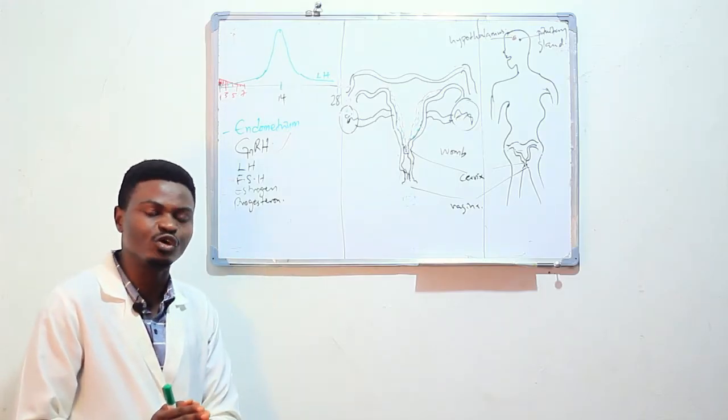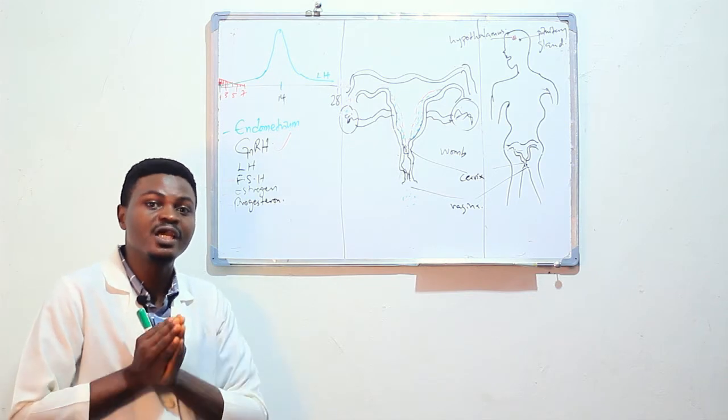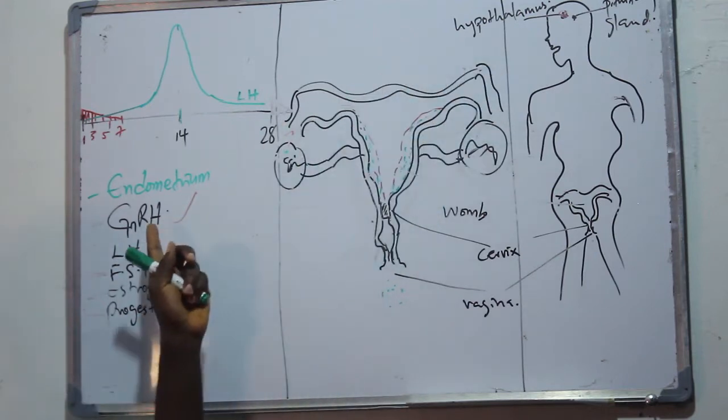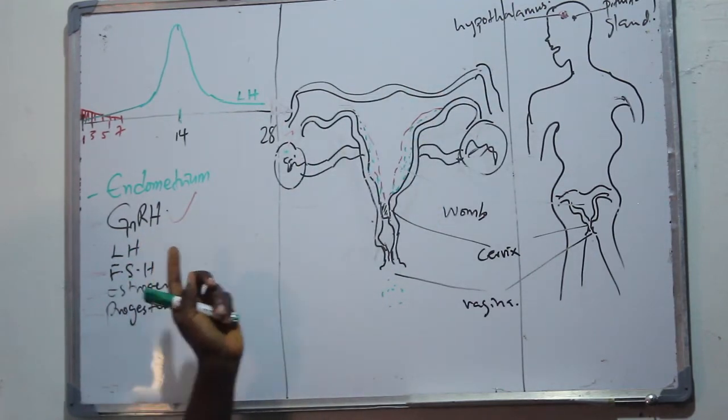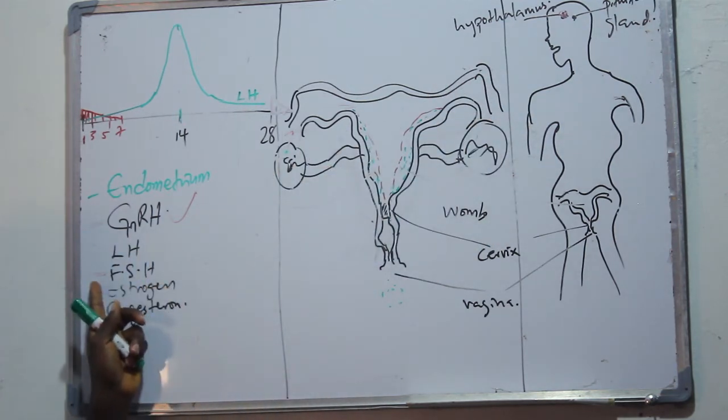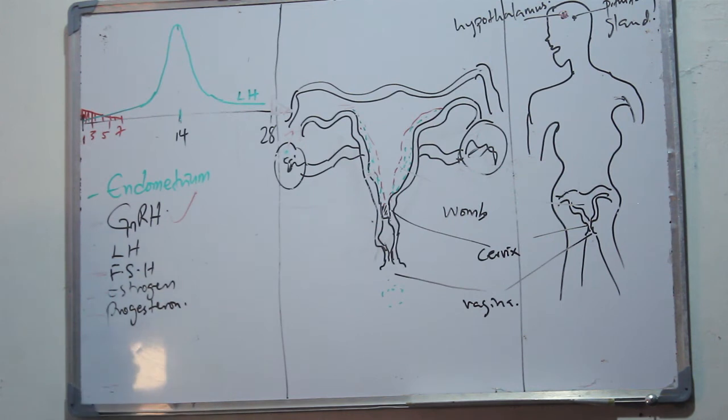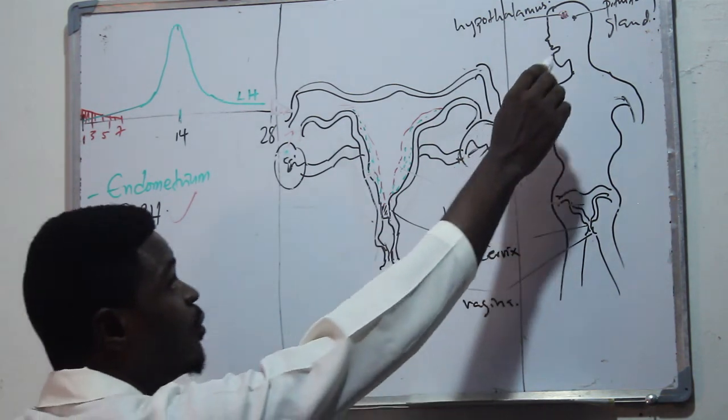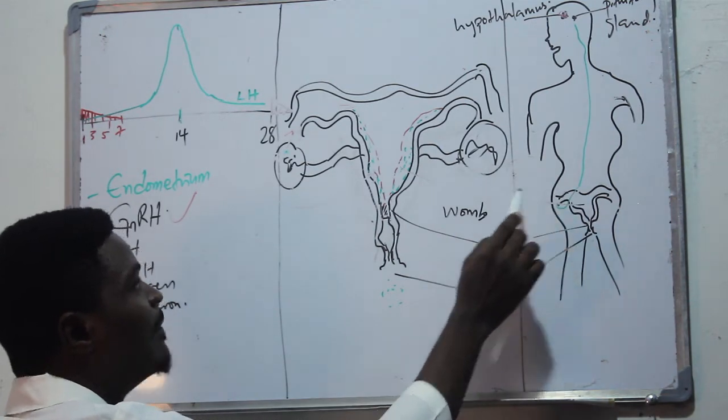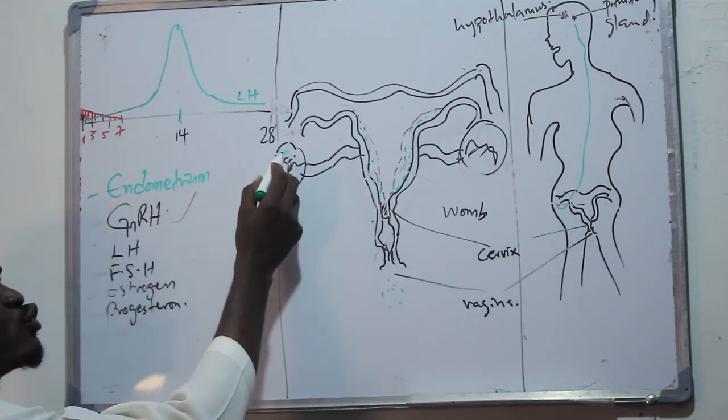The hypothalamus releases the gonadotropin releasing hormone which will now trigger the pituitary gland to release another hormone called the follicle stimulating hormone. This follicle stimulating hormone will now travel down from the hypothalamus into the reproductive tract and begin to induce the development of one follicle called the Graafian follicle.